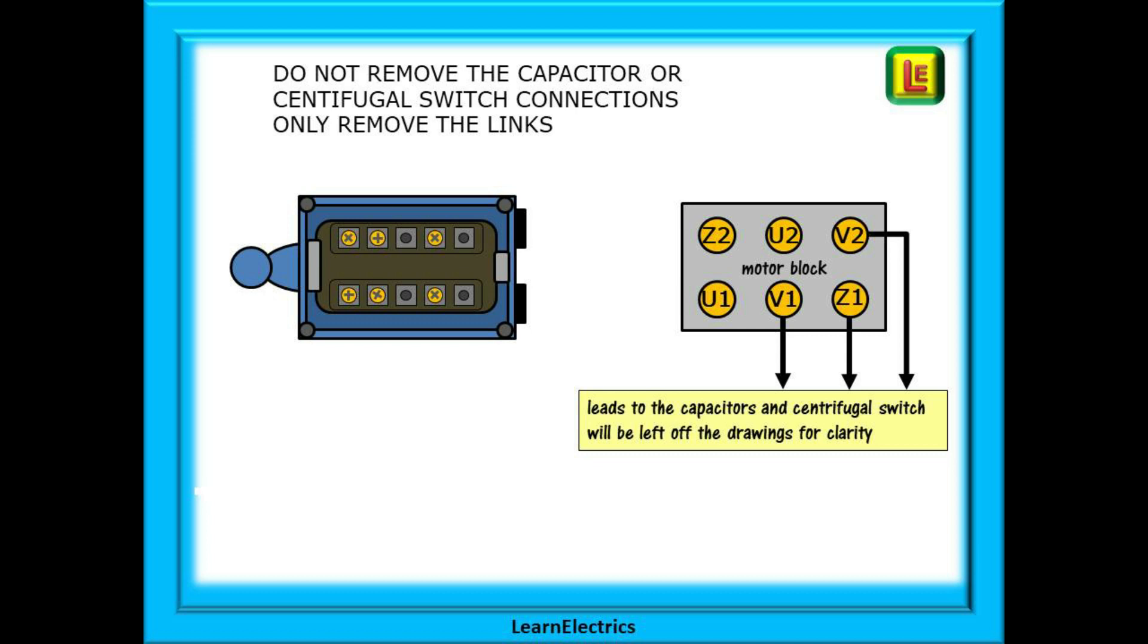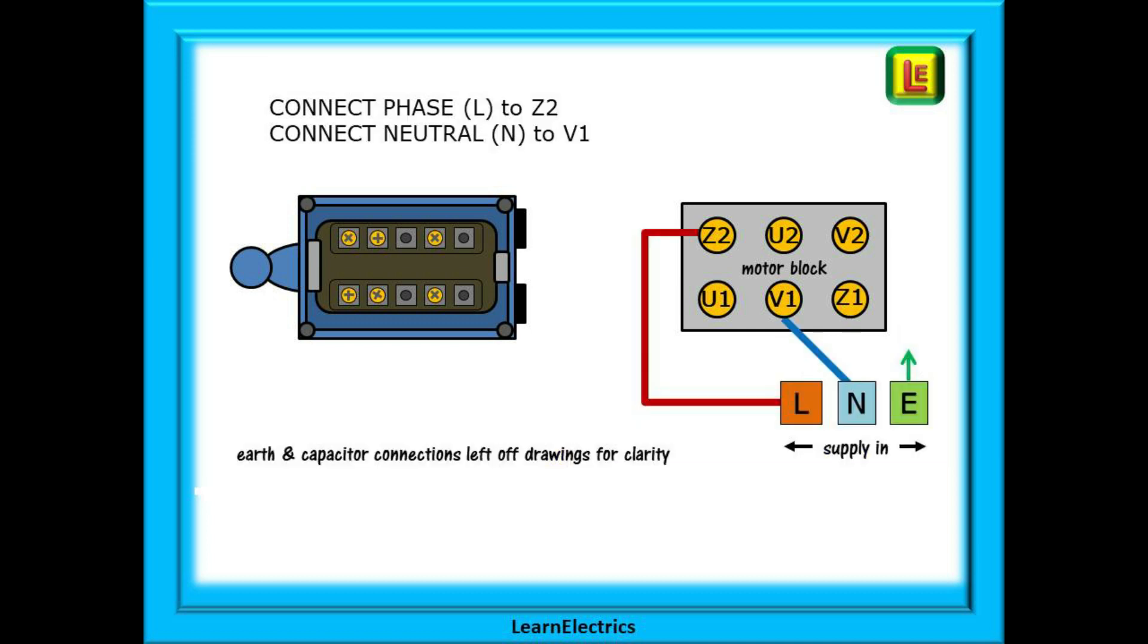So now we can start connecting the new switch to the motor block. As already mentioned do not remove the wiring to the capacitors or centrifugal switch. Only the links should be removed. After removing the links you should reconnect the incoming phase to the Z2 terminal and the neutral to the V1 terminal.